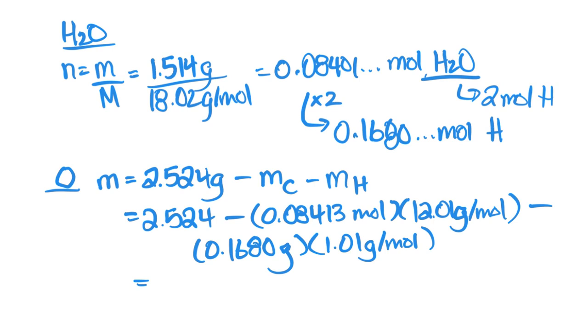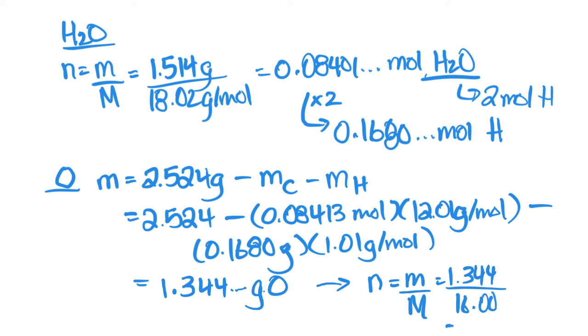If we follow through this calculation, make sure you try it, but once we do that calculation, the mass I get is 1.344 grams of oxygen. Now we can convert that number to number of moles by taking the mass over the molar mass. So 1.344 divided by the molar mass of oxygen, which is 16.00, and that gives us about 0.084 moles of oxygen.